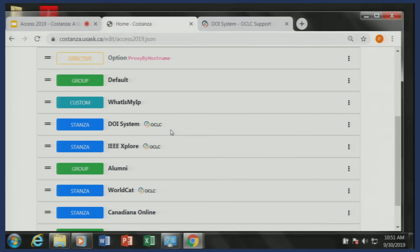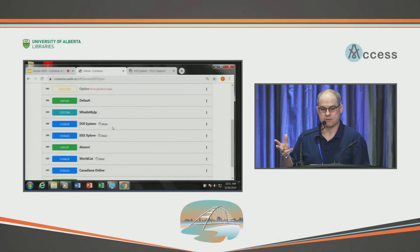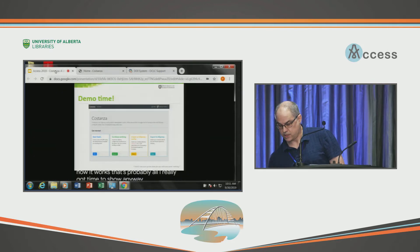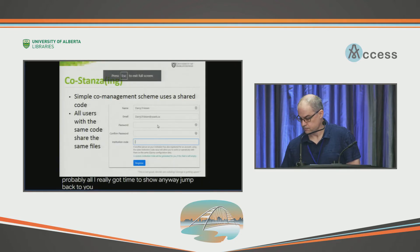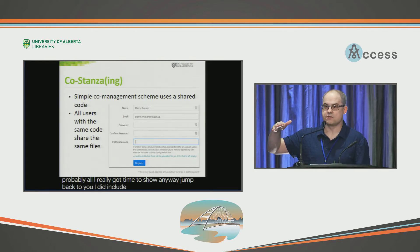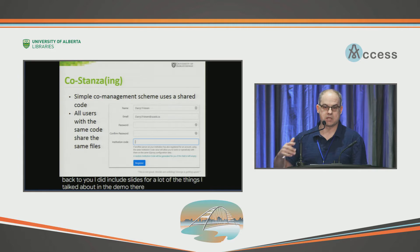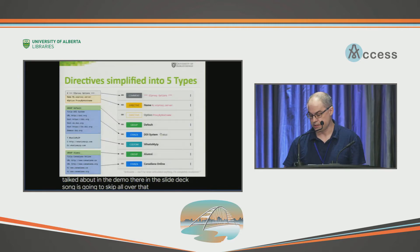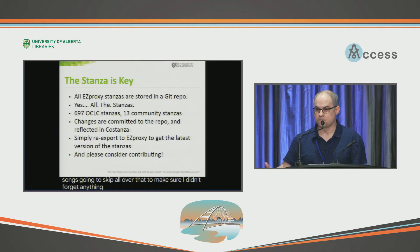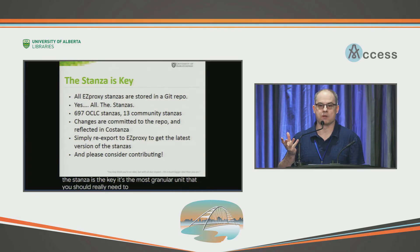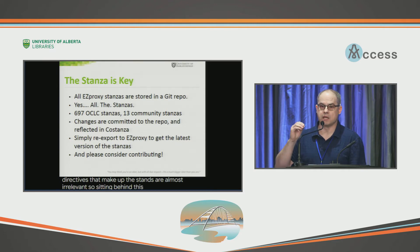I think that's probably all I've really got time to show anyway. The idea behind Costanza is that the stanza is the key — it's the most granular unit that you should really need to work with, and the individual directives that make up the stanza are almost irrelevant. So sitting behind this is a Git repo that contains all 697 OCLC stanzas. I wish there was a better way to have harvested them from OCLC than cutting and pasting, but I could not find one.